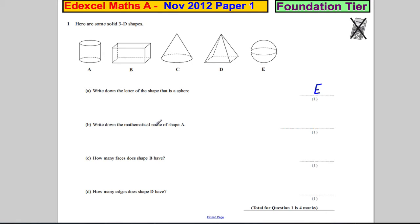Write down the mathematical name of shape A. A is similar to a can of Coke. That's called a cylinder, or a gas cylinder or something like that. So that's a cylinder.